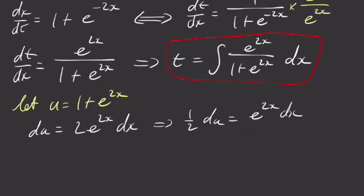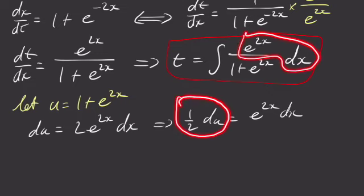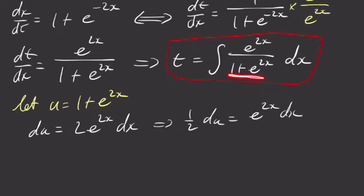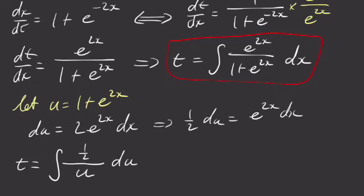And this lets me say that 1 half du is equal to e to the 2x dx. And what this is going to let me do, notice I have e to the 2x dx. So I can swap this guy for this guy. And I've already defined this as u right here. So now I have t is equal to the integral of 1 half over u du. So 1 half du has replaced that e to the 2x dx, and u has replaced 1 plus e to the 2x.